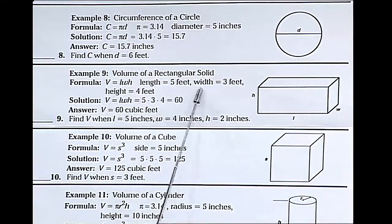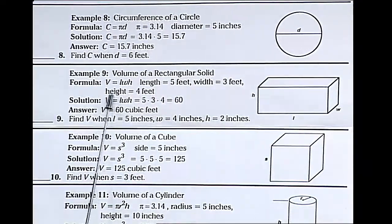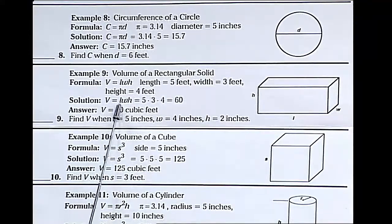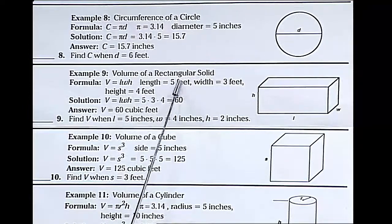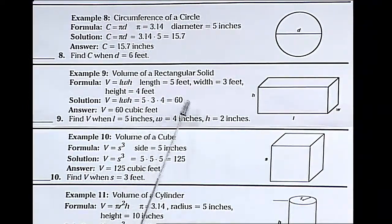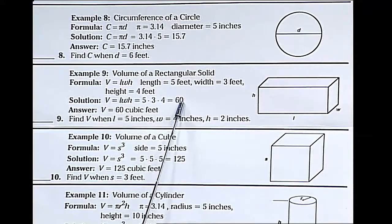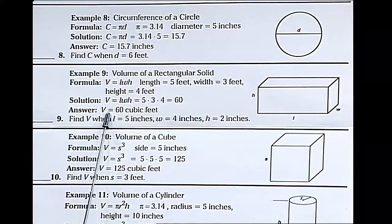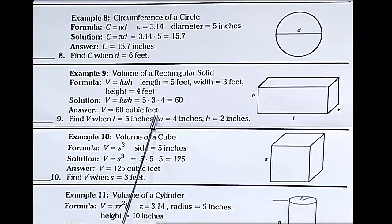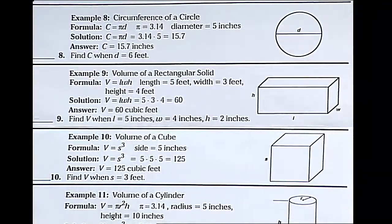The length is 5 feet, the width is 3 feet, and the height is 4 feet. So I'm going to multiply length times width times height. Substituting these numbers in, 5 times 3 times 4, I get 60. Since it's a three-dimensional object, we get cubic feet. So the answer is 60 cubic feet.